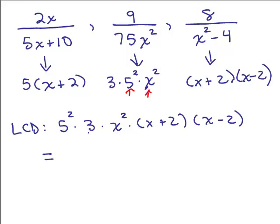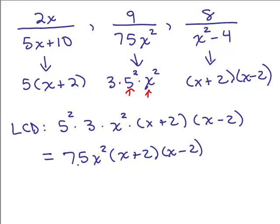I usually multiply the numbers back out, so that's 25 times 3, giving 75x squared. And you could either write x plus 2 times x minus 2, or x squared minus 4, depending on how you want to finish writing it. As far as the numbers go, you could also figure out the numerical part as 75 without doing this prime factorization — I'm just doing all of them the same exact way.